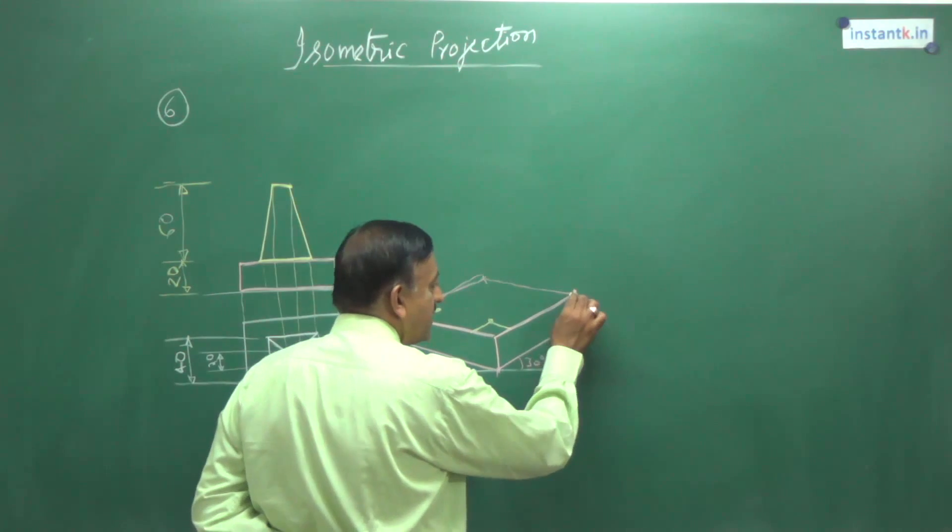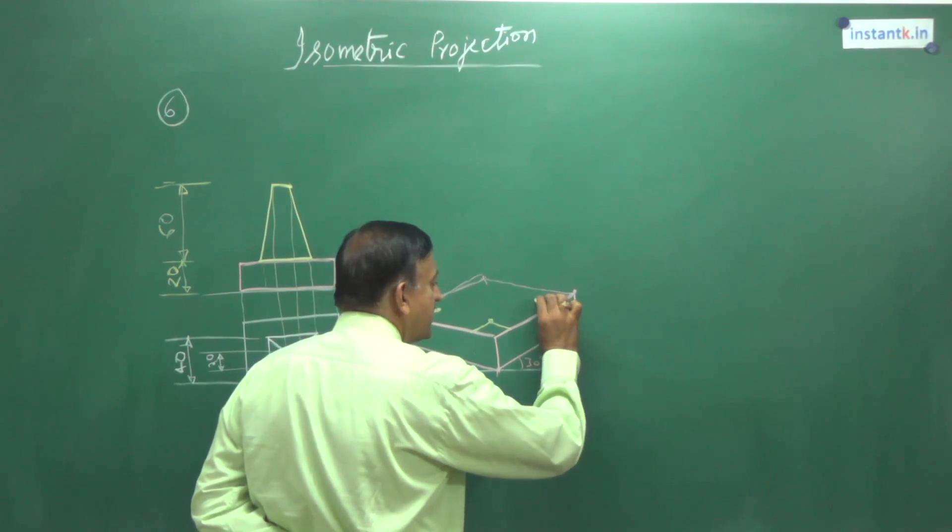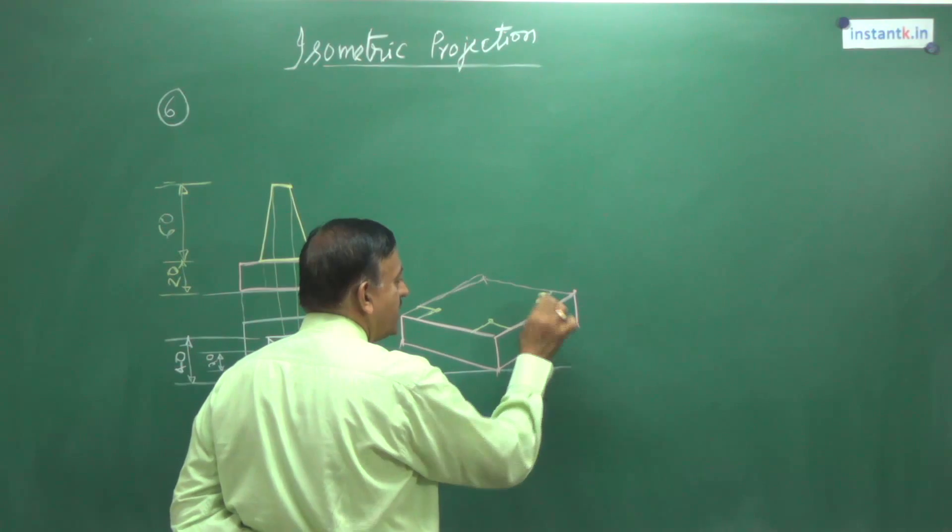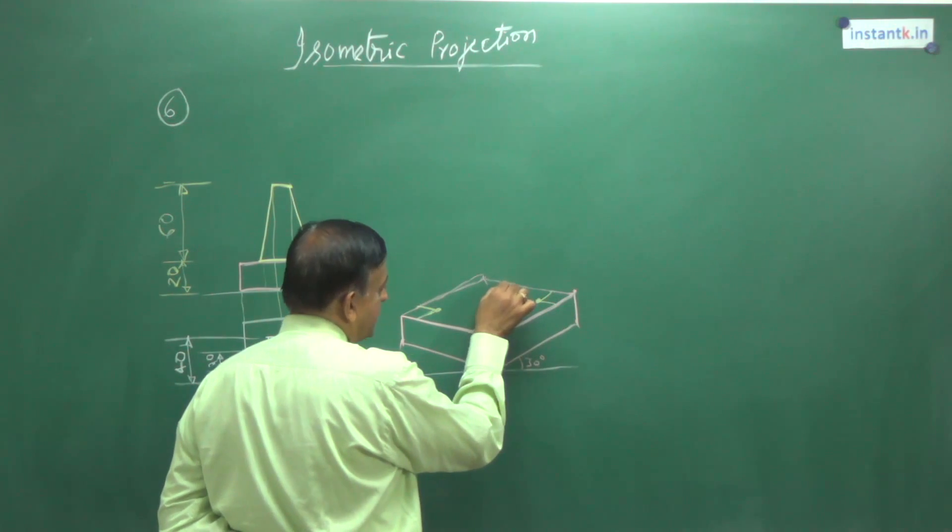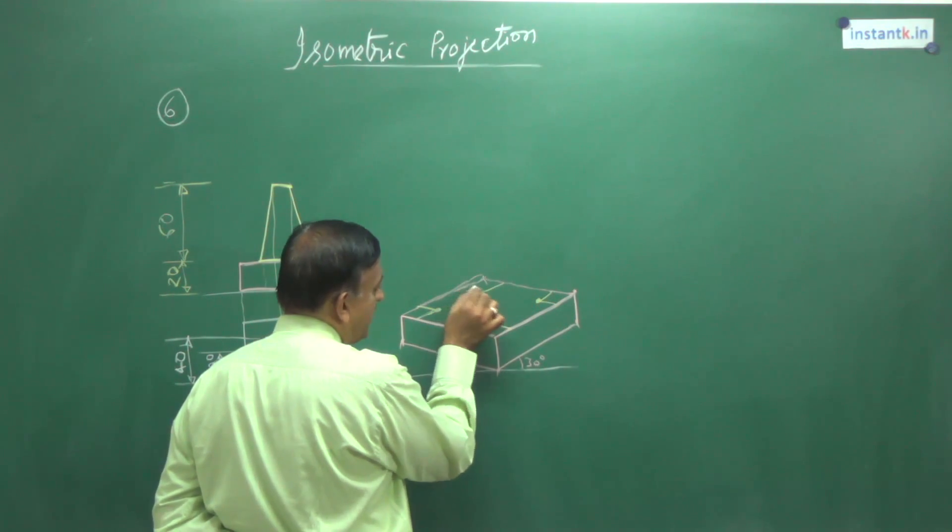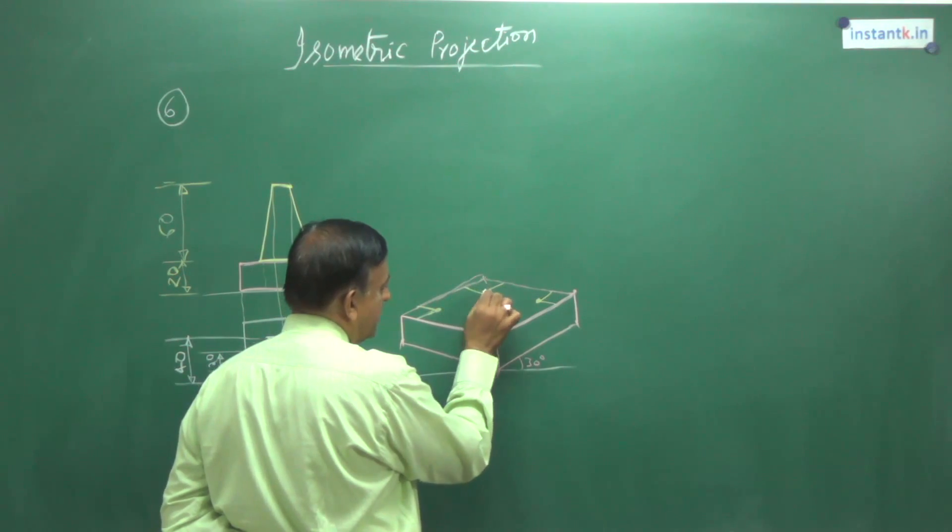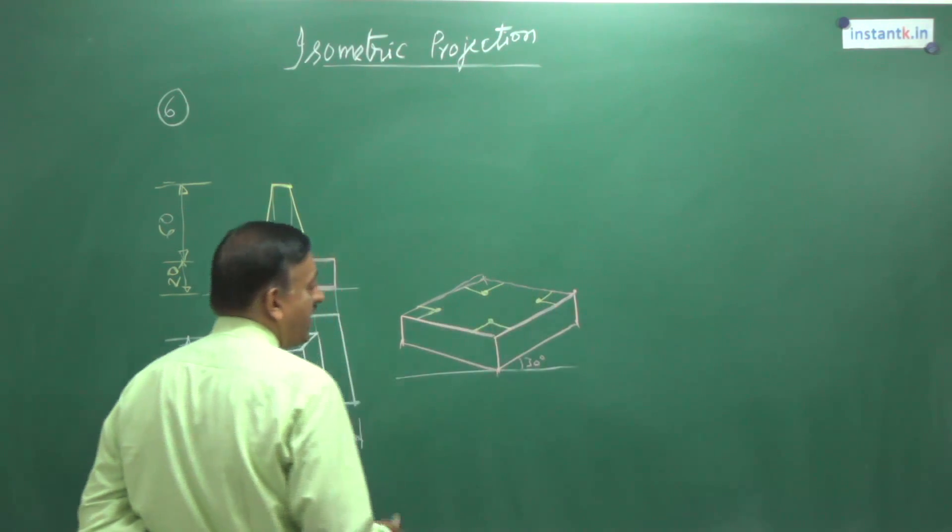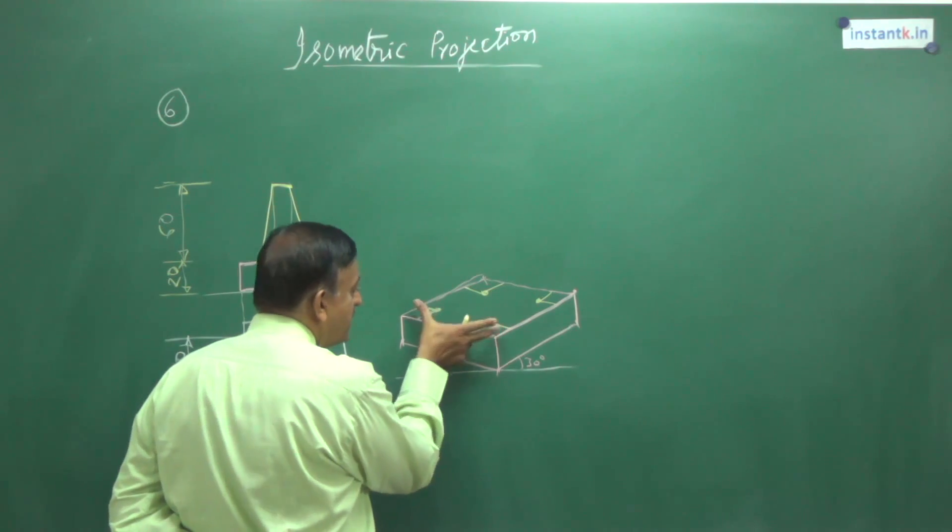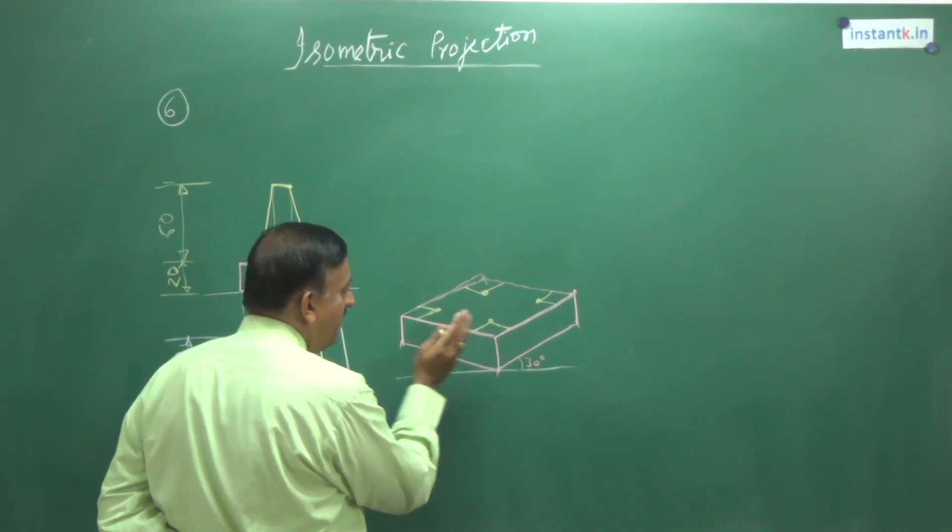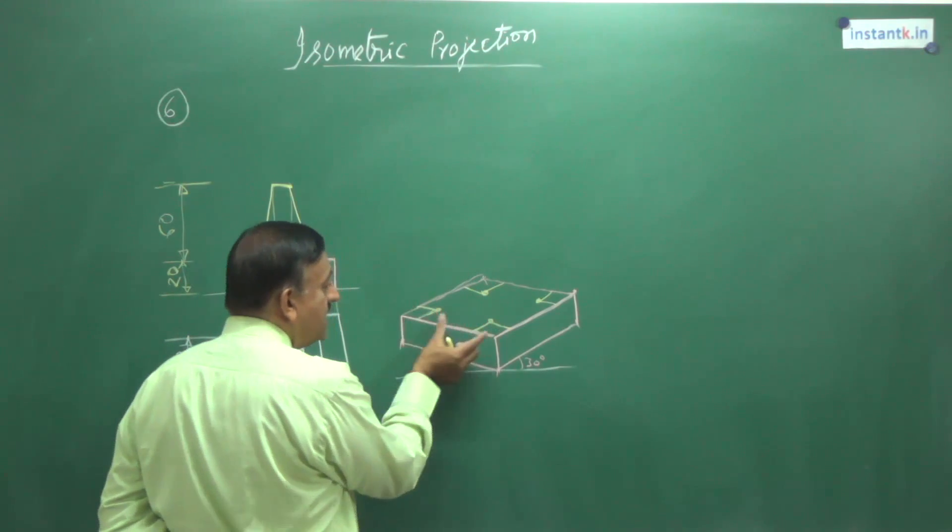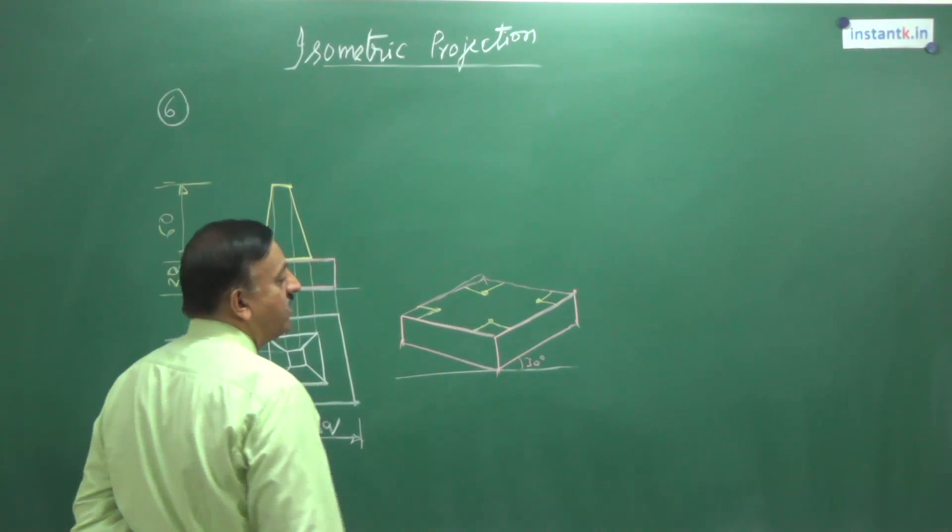Similarly, mark 10 mm here, draw a 30 degree line. You are getting one more point. 10 mm inside, draw a 30 degree line. Here, 10 mm inside, draw a 30 degree line. So you are getting one more point. Why should we get one more point? This should be 40, the total is 60. So I am cutting off 10 on either side so that the inside one will become 40 mm.